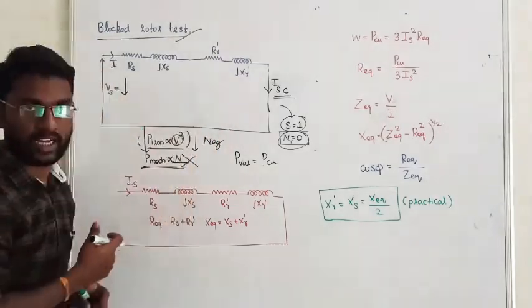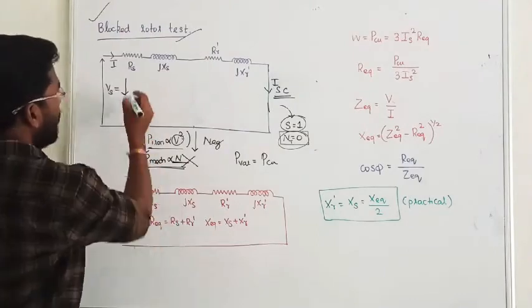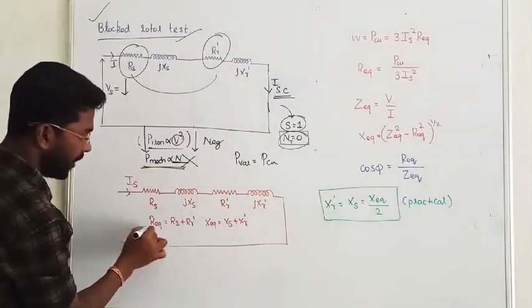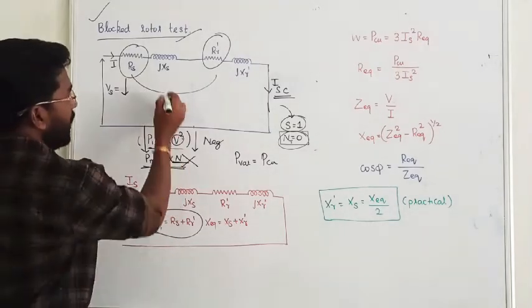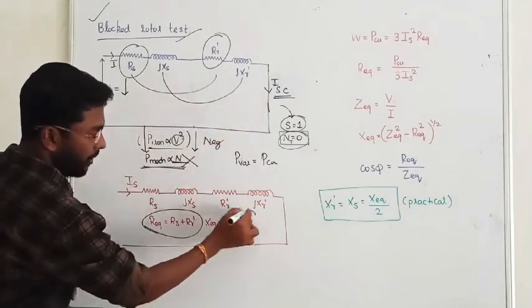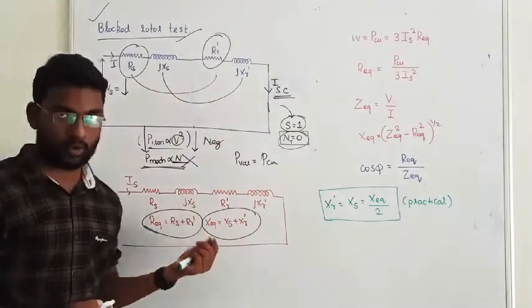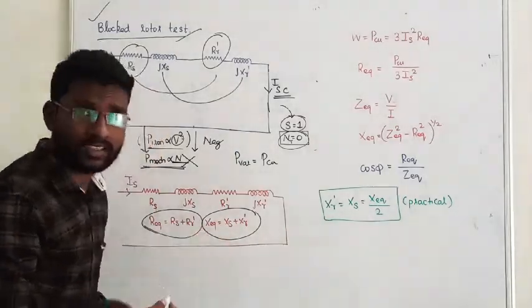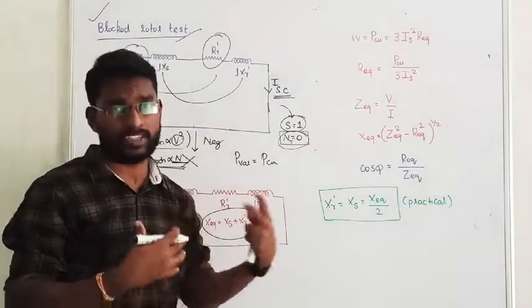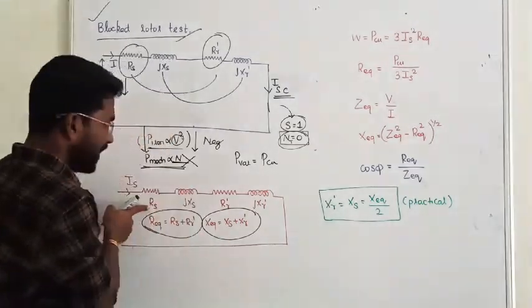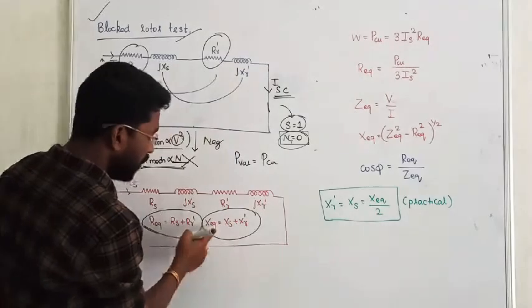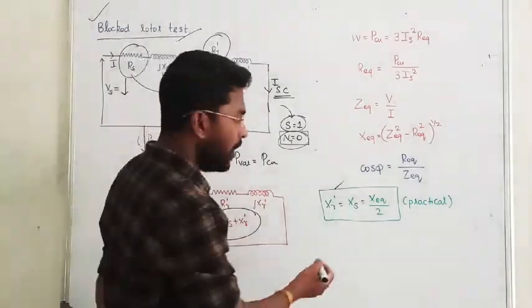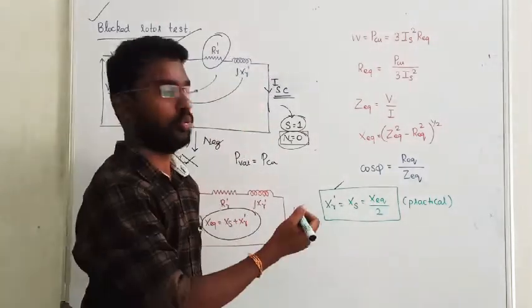That is the equivalent circuit under blocked rotor test. Stator resistance and rotor resistance combined, we will get R equal. Similarly, stator reactance, rotor reactance combined, we will get rotor equivalent reactance and resistance. In reactance, stator resistance and rotor resistance, equal resistance is approximately equal. And they are equal to X equivalent by 2.